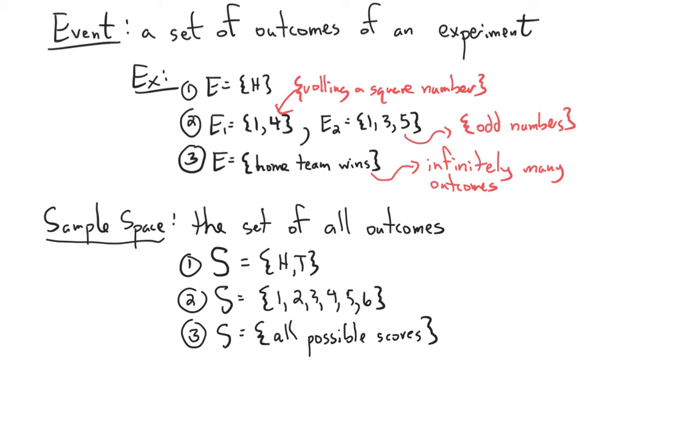For rolling a die, the outcomes you can get are 1, 2, 3, 4, 5, or 6. So the sample space is the set of all of those. And for playing a hockey game, S in this case, and yet recording the score, is all possible scores. Since our experiment is playing a hockey game and recording the score.